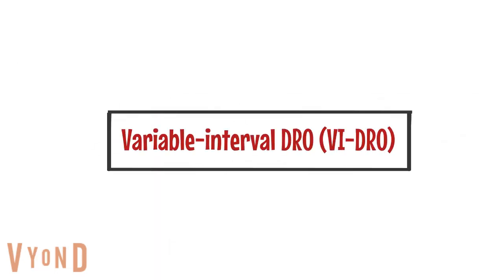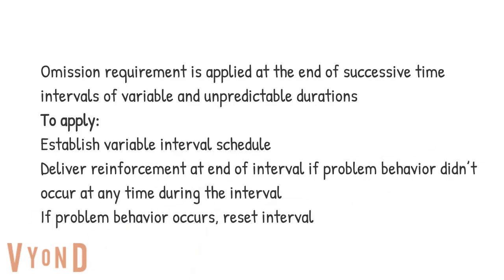Then there is variable interval DRO. At the end of successive time intervals of variable and unpredictable durations, the behavior must be omitted. To apply this, you establish variable interval schedules — for example, any time between three to five minutes. You deliver reinforcement at the end of the interval if the problem behavior did not occur at all during the interval. Just like fixed interval DRO, if the problem behavior occurs, you reset the interval.